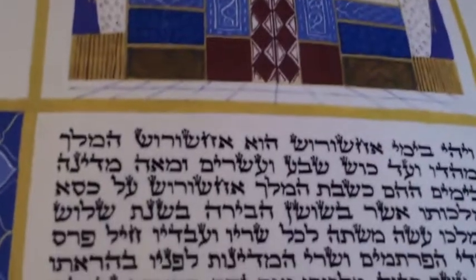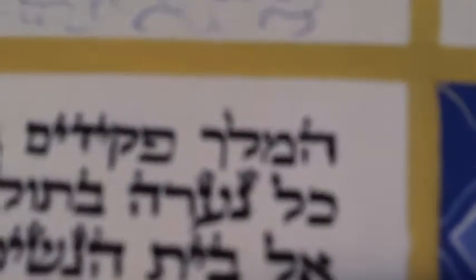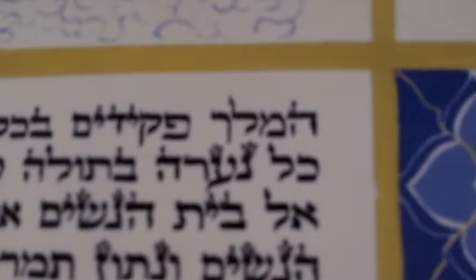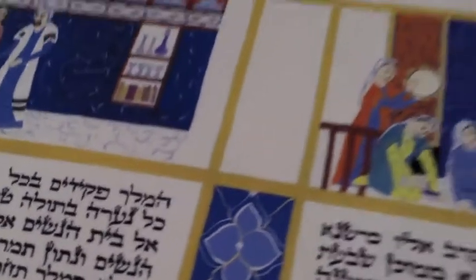It's a kosher Megillah. It's a ha-melech — as you can see, ha-melech is at the top of every column, the first word: ha-melech. Hashem's name isn't mentioned in the Megillah, so ha-melech is seen as the recognition of God's hand in everything that is created.